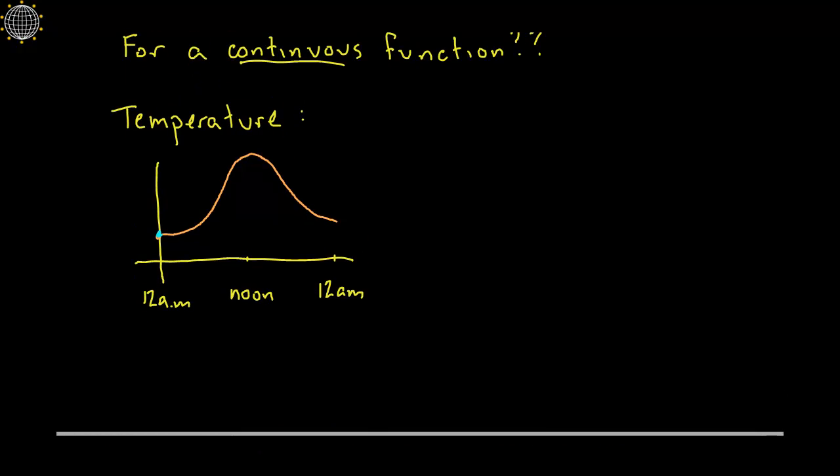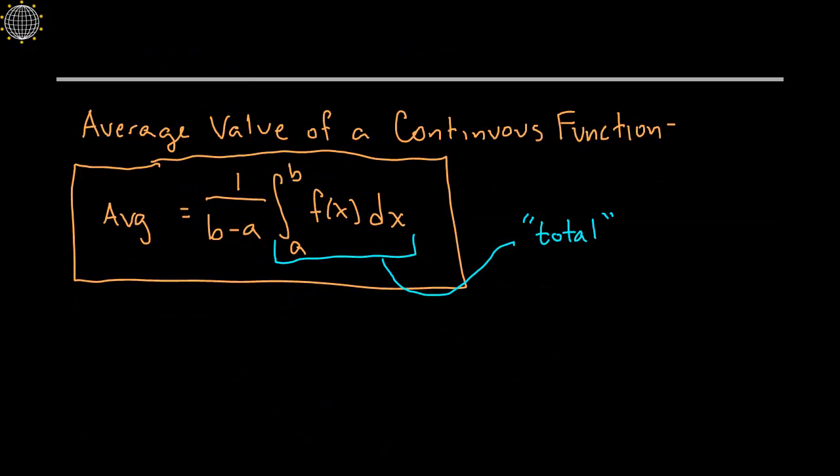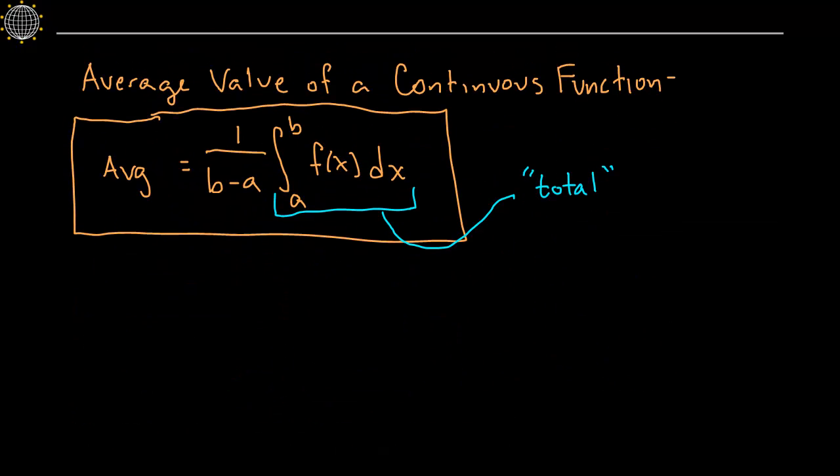So in this example here, if you took the integral from a to b, this will give you the total area under the curve. Now what we're going to do beyond that is what do we do with Johnny's test grades? Once we get that total amount, we divided it by how many tests he took. He took three tests, so we divided that quantity by three.